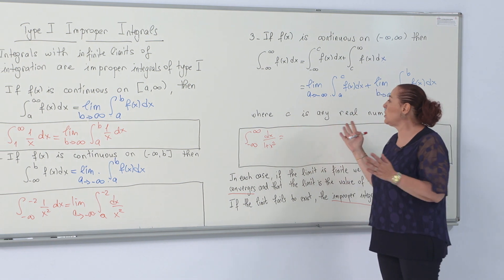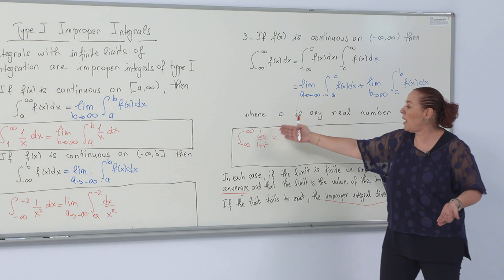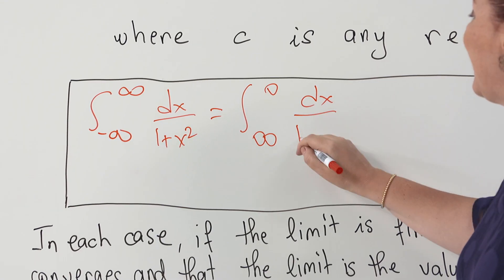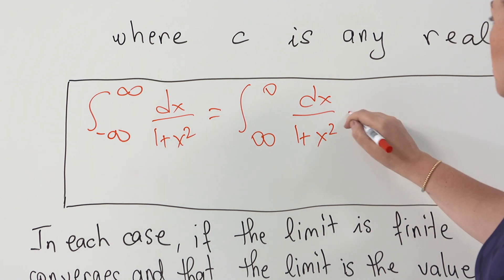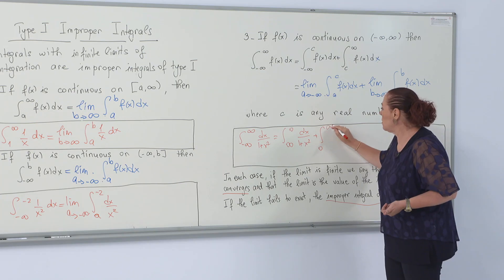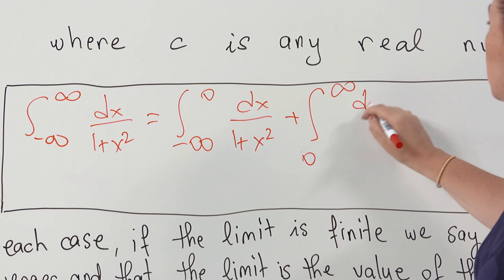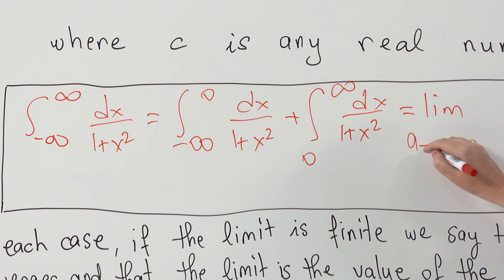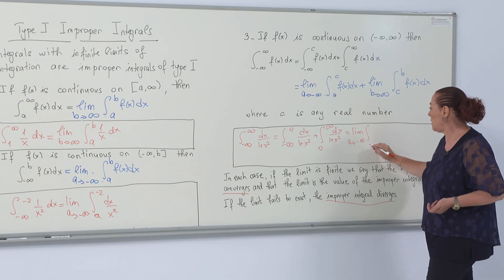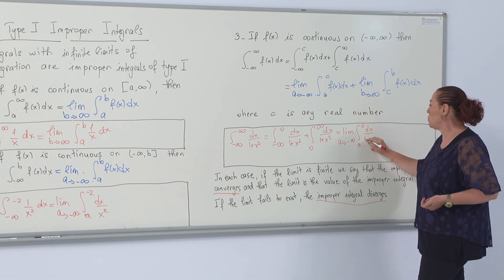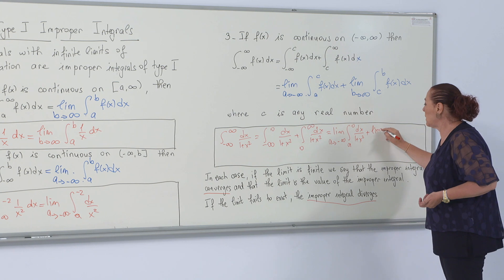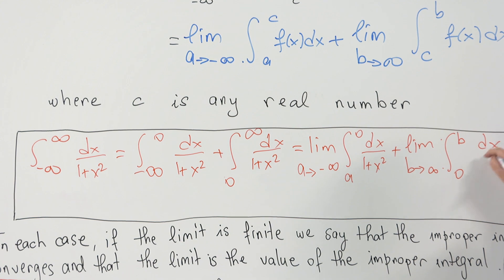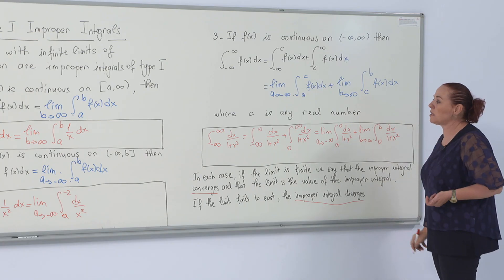For the case where both limits are infinite, I pick a real number between minus infinity and infinity — I'm choosing 0, but you can choose any other real number. So the integral from minus infinity to infinity of dx over 1 plus x squared splits into: the limit as a goes to minus infinity of the integral from a to 0 of dx over 1 plus x squared, plus the limit as b goes to infinity of the integral from 0 to b of dx over 1 plus x squared.